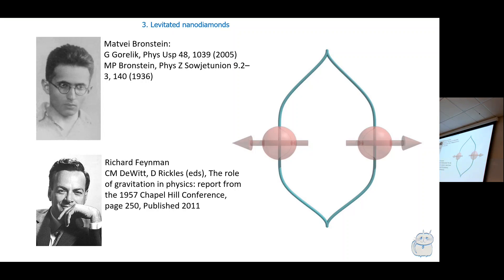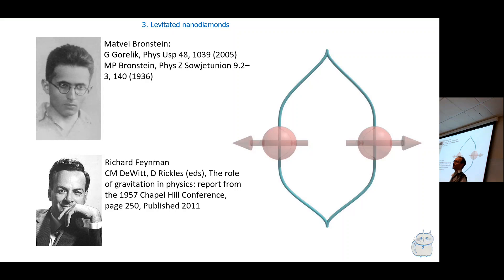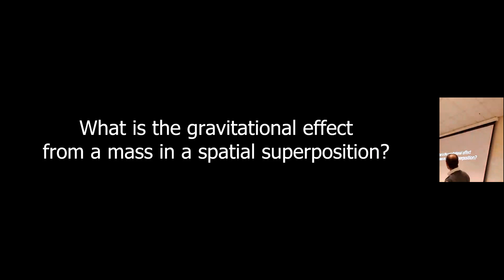Macroscopicity depends on mass, superposition distance, and time — all three together define how macroscopic a superposition is. There's a lot of work on defining macroscopicity with no single answer, but certainly large mass, large superposition distance, and long duration all contribute. This question dates back many decades and seems well-posed: if quantum mechanics allows superpositions of massive objects, what's the gravitational effect of that system?